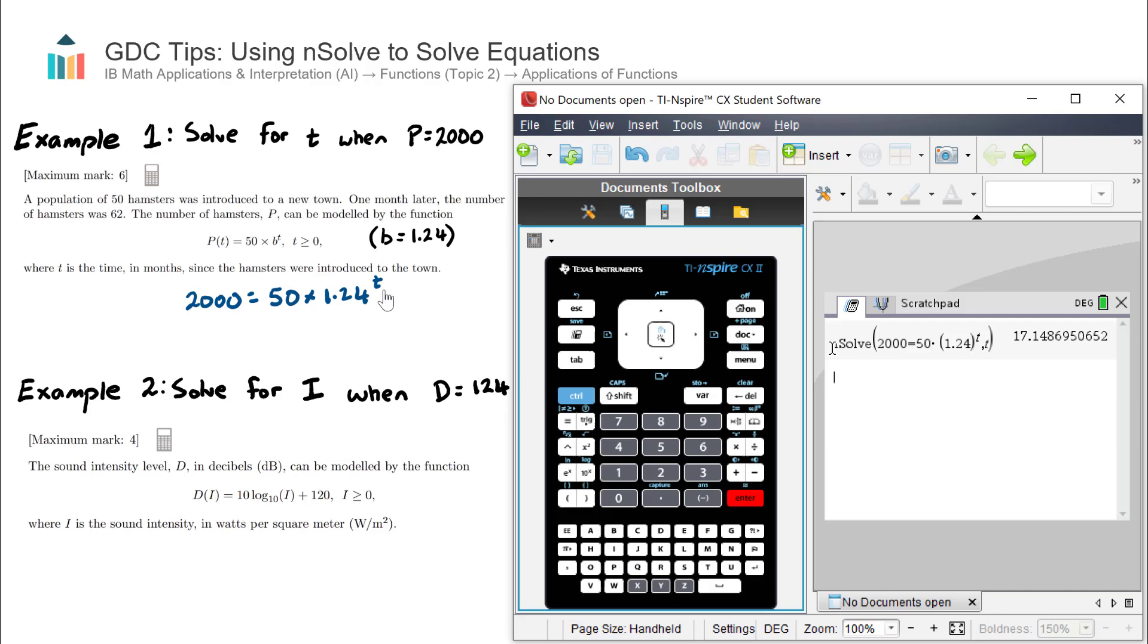So t equals 17.15, or to two decimal places, when the population of hamsters is 2,000. Actually, I'll leave it to three significant figures—that's good practice for IB—so 17.1. We can note afterwards 'using GDC' to demonstrate how we solved it.